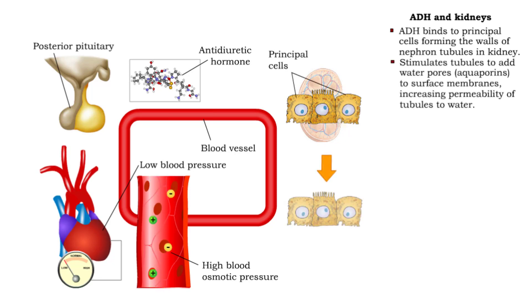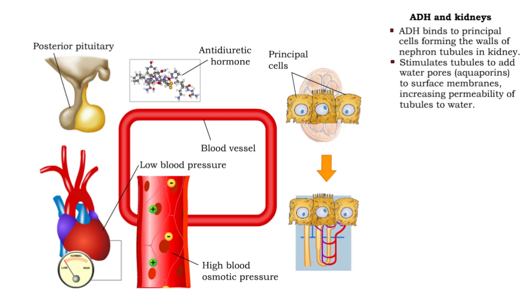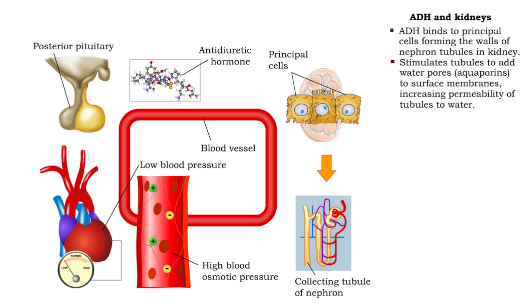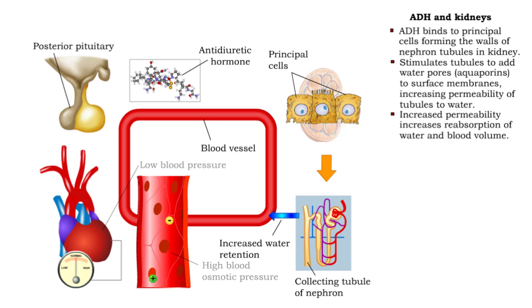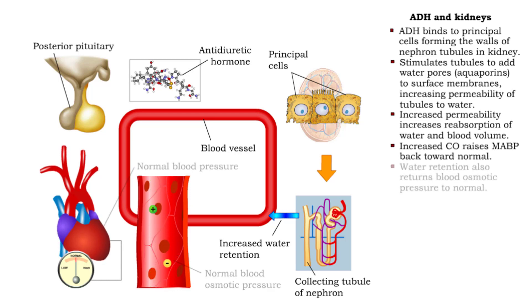The tubules add water pores called aquaporins to surface membranes. This increases the permeability of the tubules to water, counteracting the high osmotic pressure and increasing reabsorption of water. The greater water retention increases blood volume.